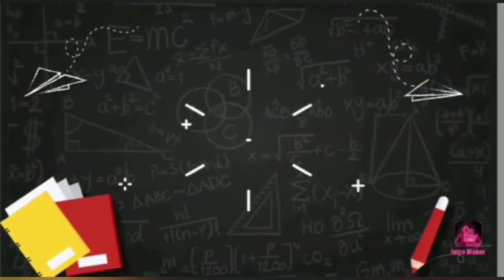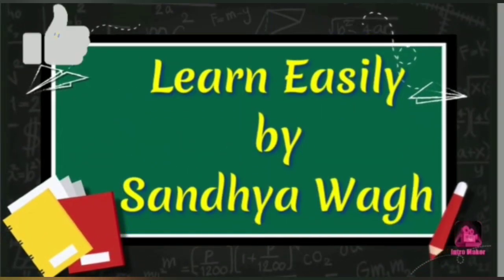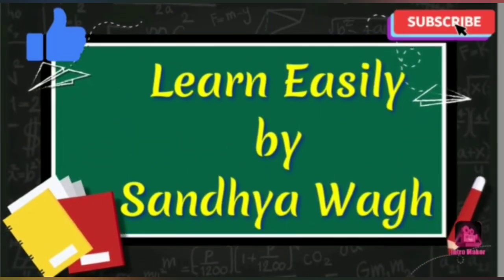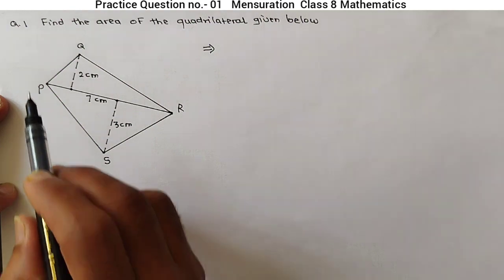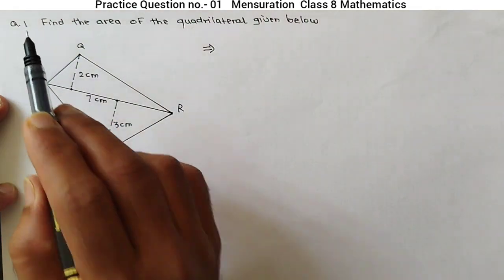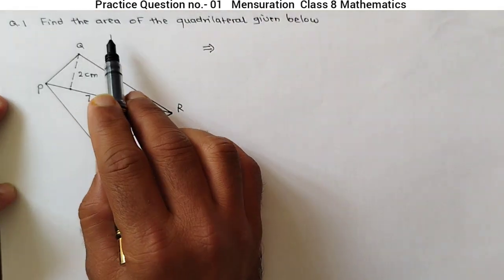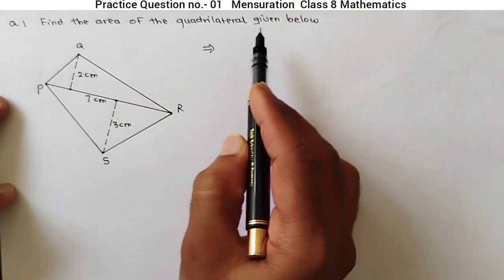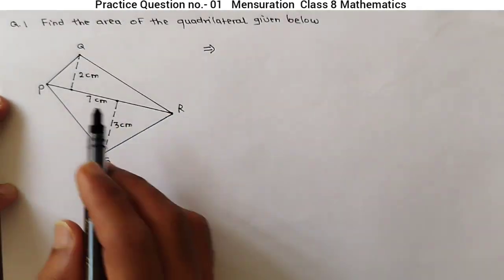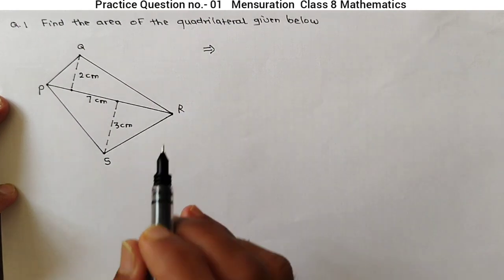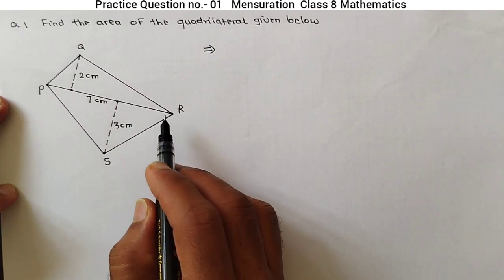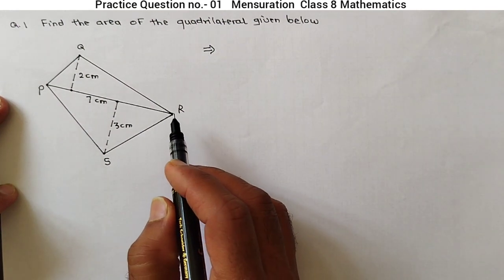Hello dear all, I am Suntosh Vaz and welcome to channel Learn Easily by Sandhya Vaz. See practice question number one: find the area of the quadrilateral given below. This quadrilateral is given and we have to find the area of this quadrilateral.